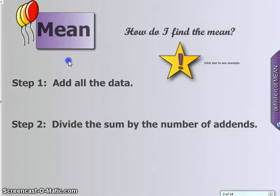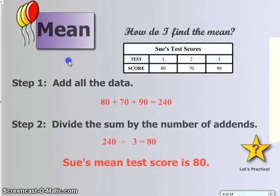We're now going to see an example of how do I find the mean. We have a chart here that shows Sue's test scores. Test 1, 2, and 3, and what her scores were on that test. We're going to add all of her scores together. 80 plus 70 plus 90. You can see them going all the way across here. Our sum, when we add them all together, is 240.